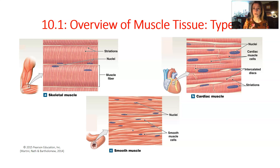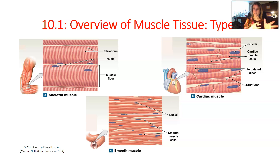Skeletal and cardiac muscle cells also have in common that they are multinucleate, meaning they have many nuclei per cell. This is because during development, the precursors to these cells merge together and those nuclei remain inside the cell. Smooth muscle cells, by contrast, have only one nucleus.